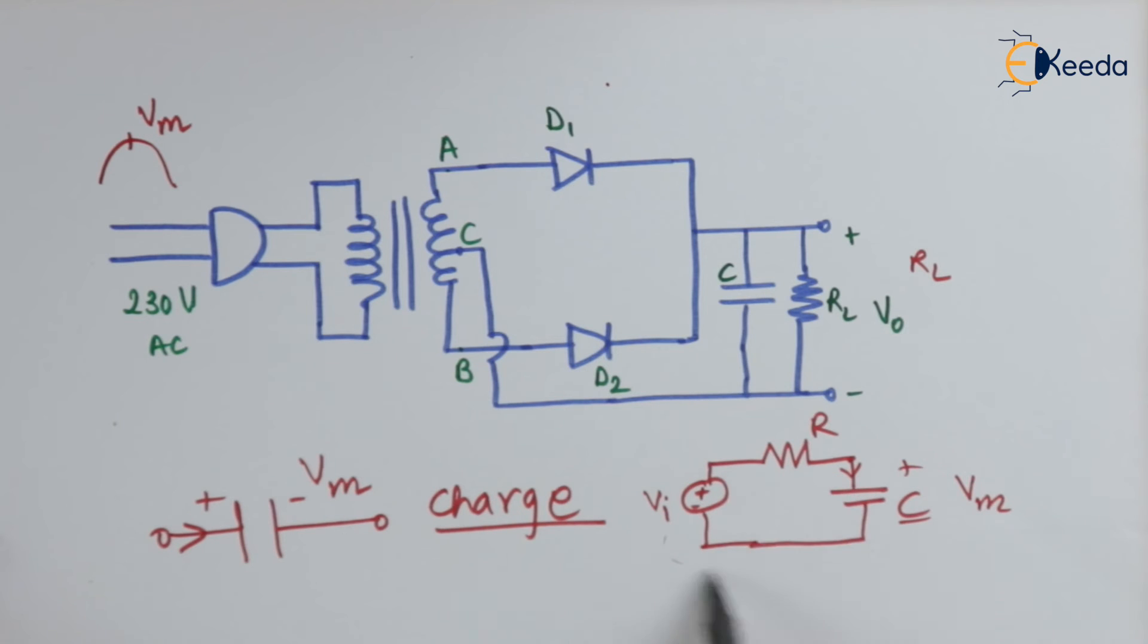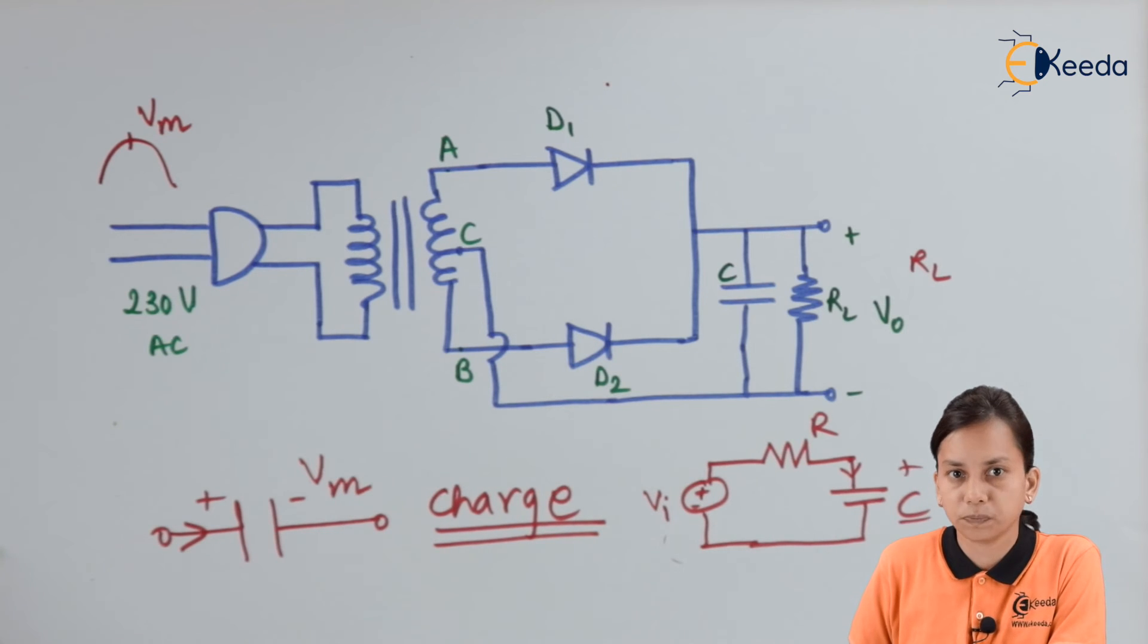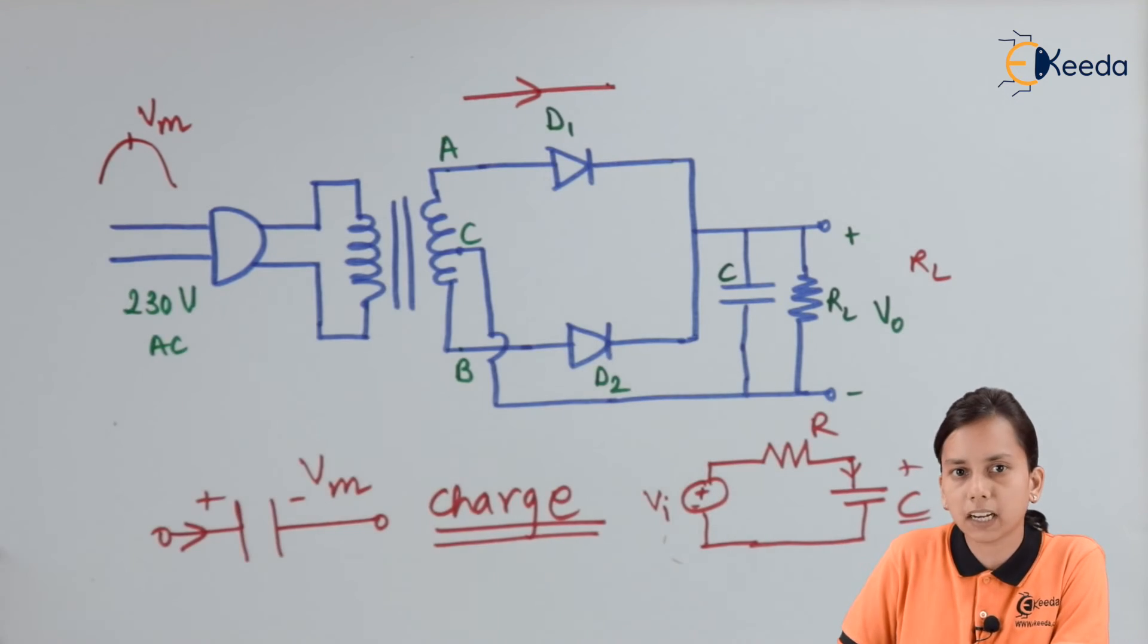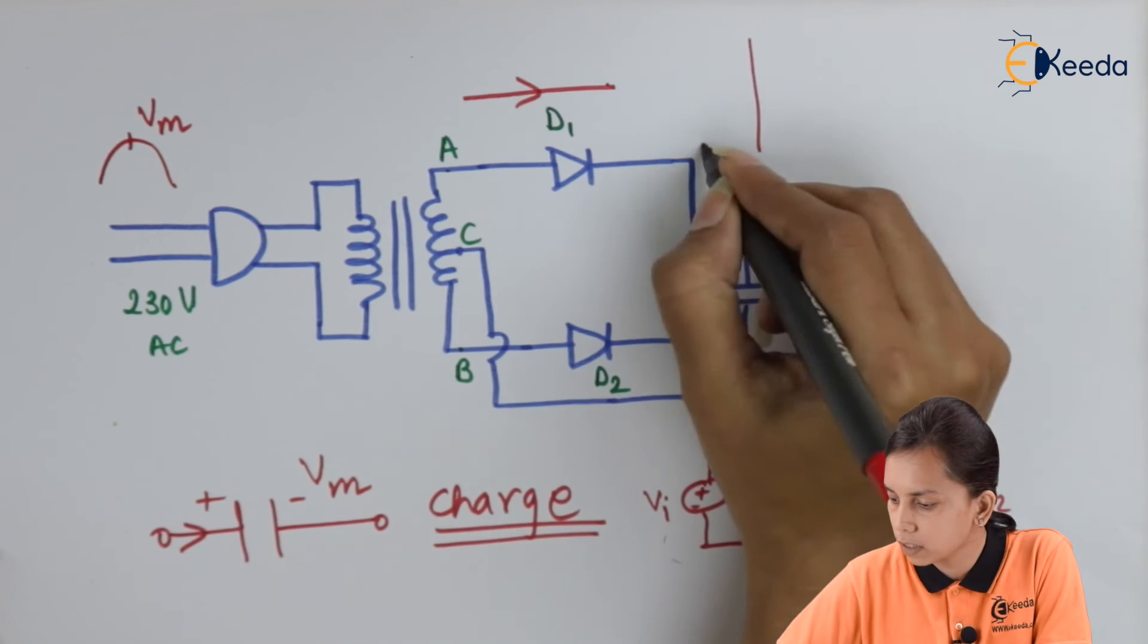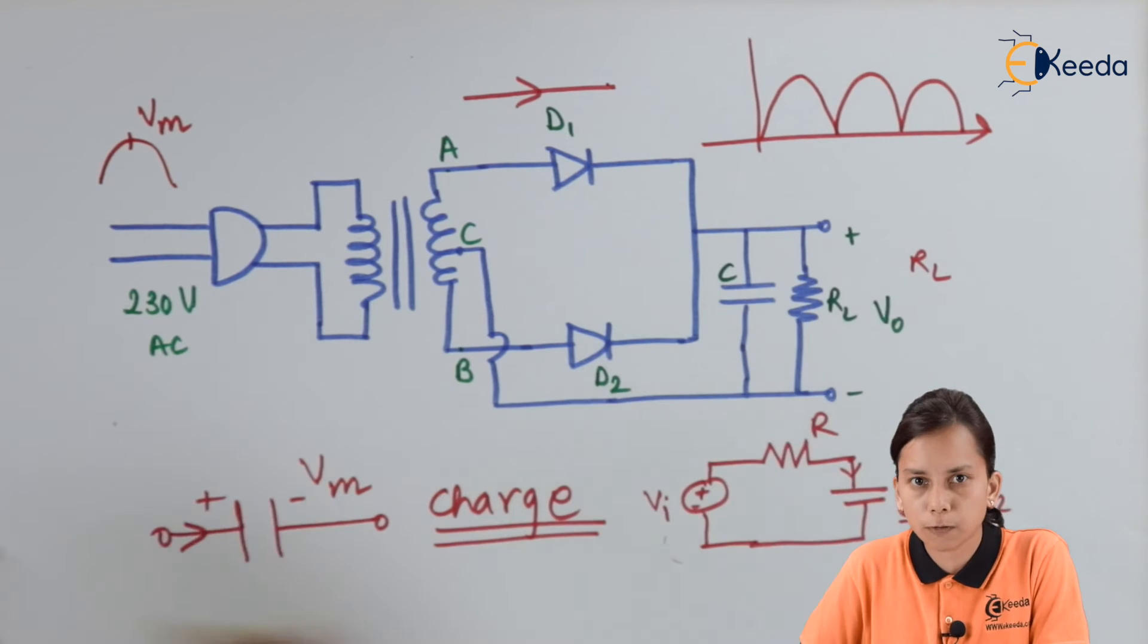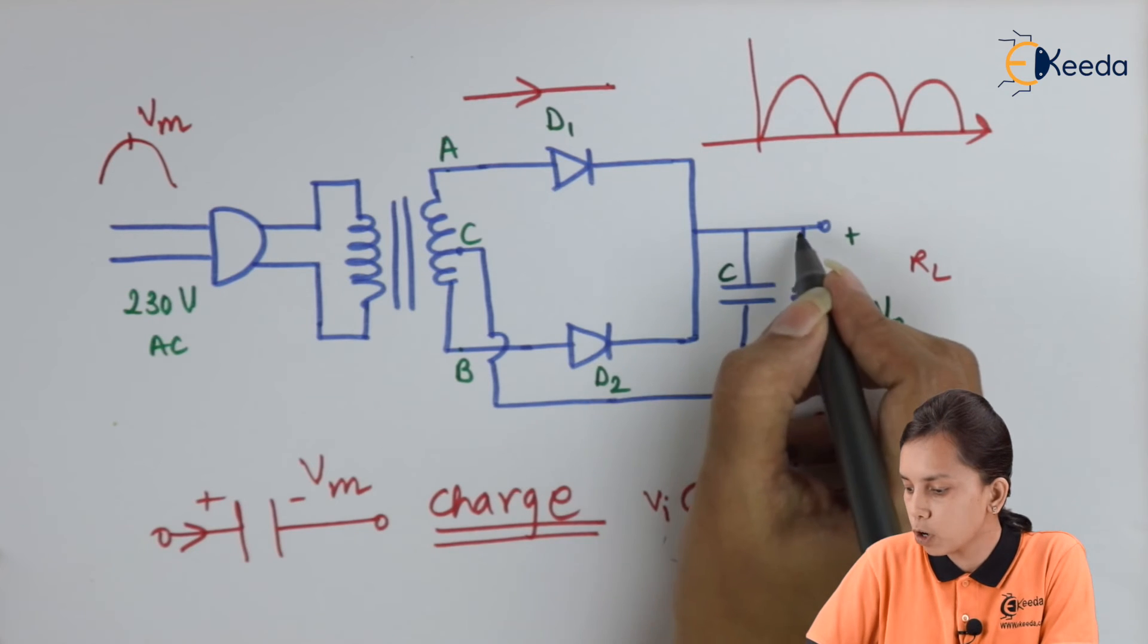Capacitor will charge to its maximum value that is Vm. Now I will remove this voltage. When I will remove this voltage, this circuit, still this circuit is connected. Now the voltage at this capacitor is high as compared to R. Then capacitor will start discharging. So what I can say that capacitor charge and then discharge. When D1 is connected with the help of this positive cycle, it is in an on state, what we can say that capacitor will charge. Let us look at the output. This is our output.